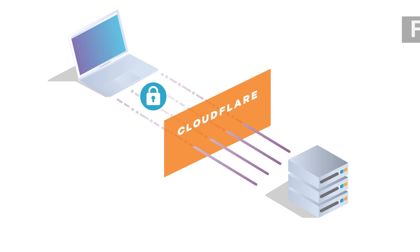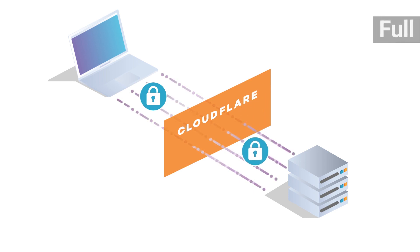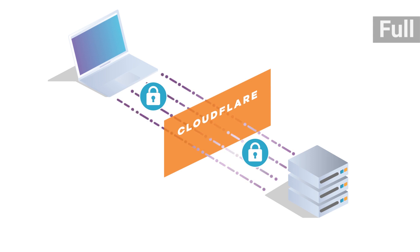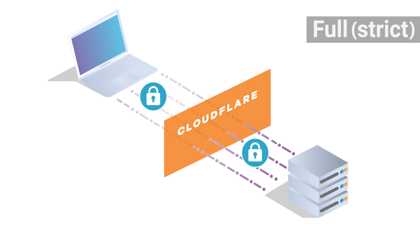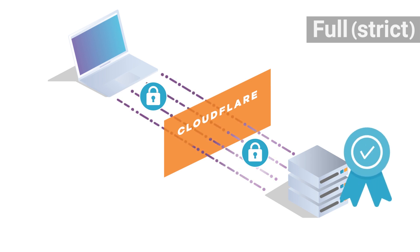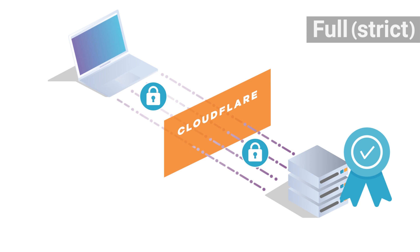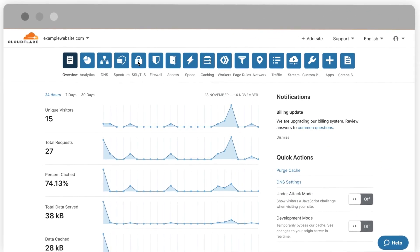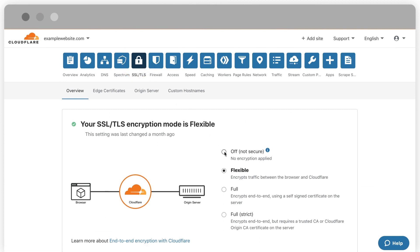Full and Full Strict is when the connection between the user, Cloudflare, and your origin server are all over HTTPS. The main difference between Full and Full Strict is that self-signed certificates cannot be used for Full Strict. There are only a handful of certificate authorities in the world that are widely recognized as the root of trust. Cloudflare is a certificate authority.